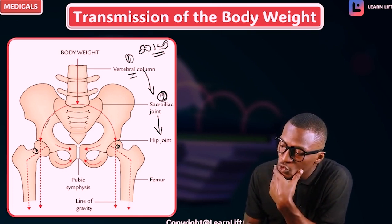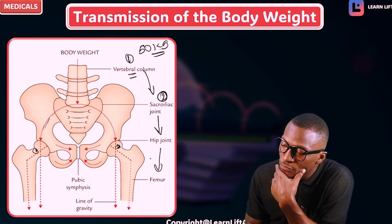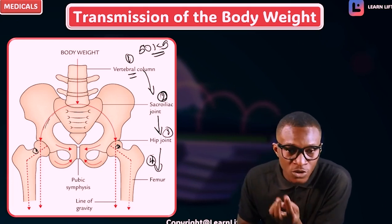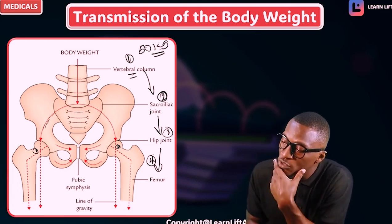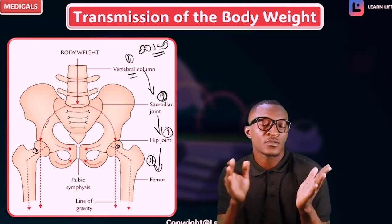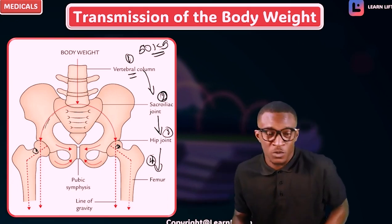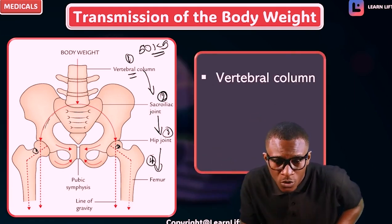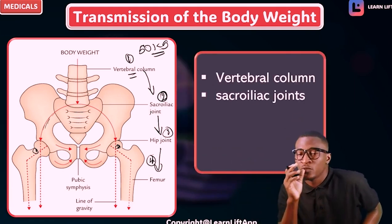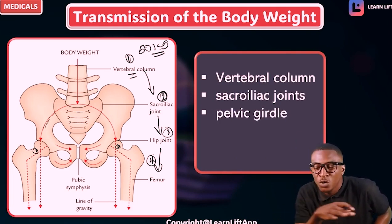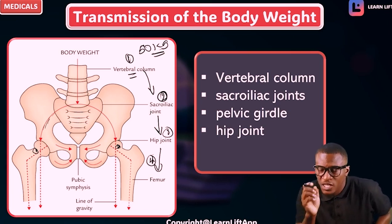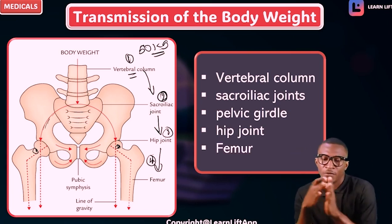From the sacroiliac joint, the weight spreads within the pelvic girdle, moving to both sides of the limbs. From the sacroiliac joint it goes to the hip joint — both hip joints. From the hip joint it continues and moves towards the femur. So the pathway is: vertebral column → sacroiliac joint → pelvic girdle → hip joint → femur.